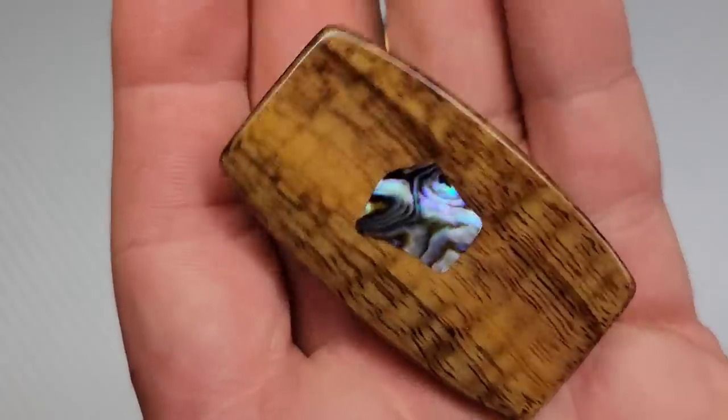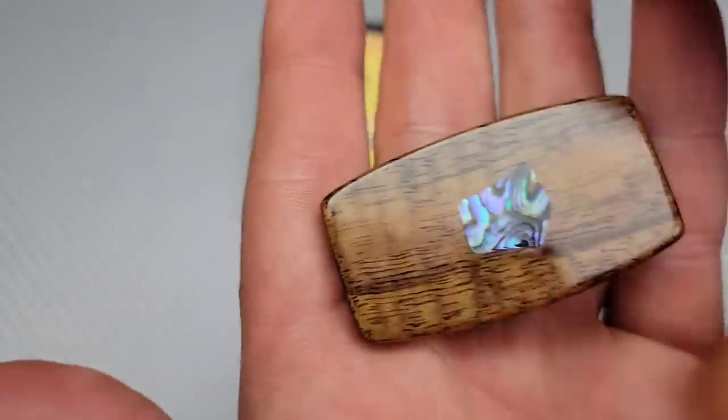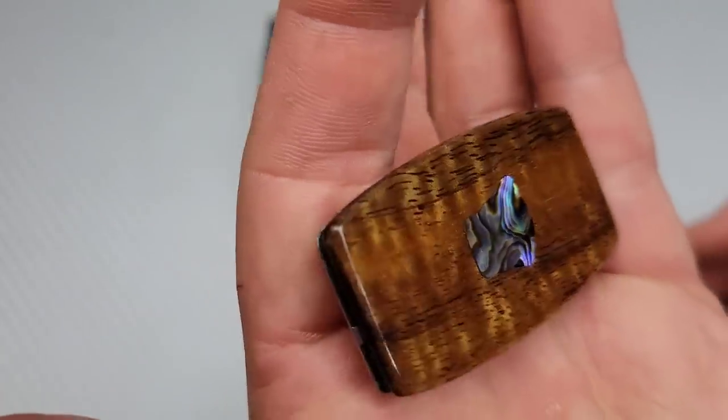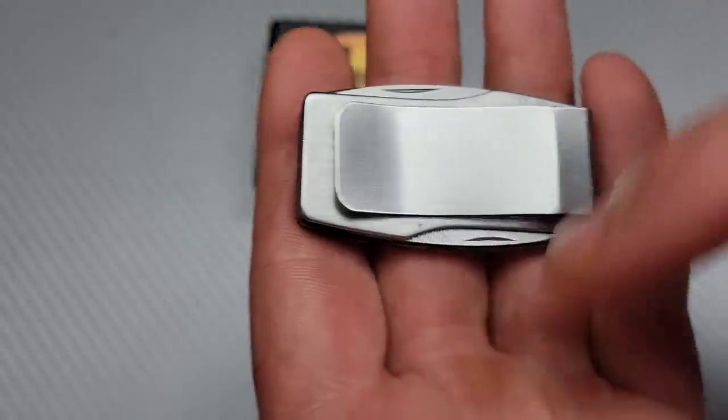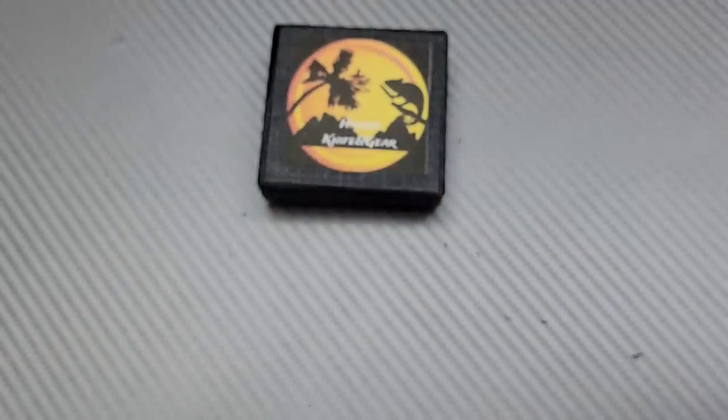This one's just a little Victorinox, and then this one is a money clip that he made for me. Same thing, we have the shell inlay with the koa wood. You can really see how it plays with the light, it's just so beautiful, very smooth to the touch.